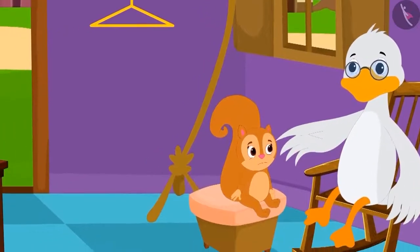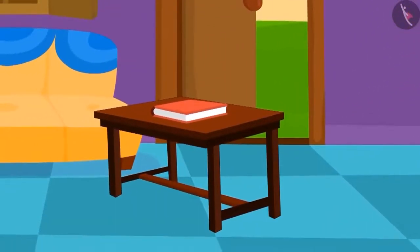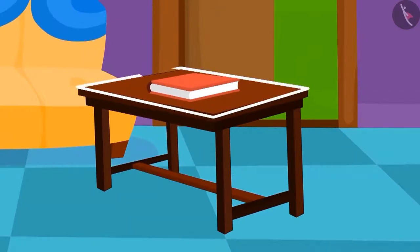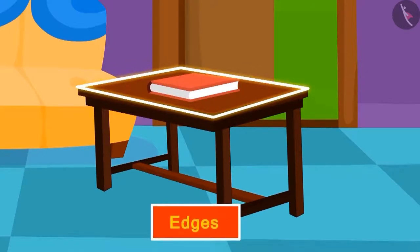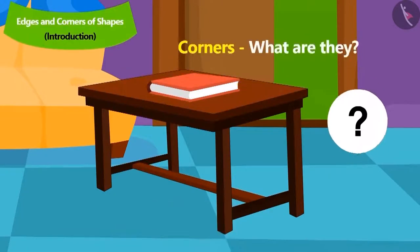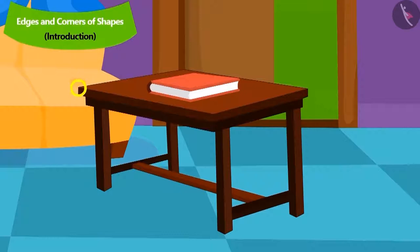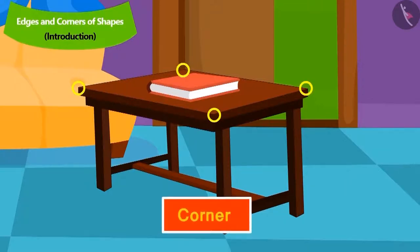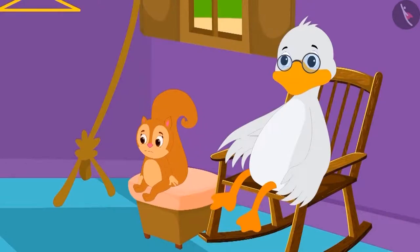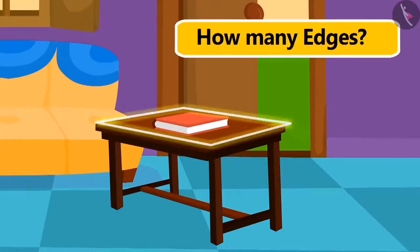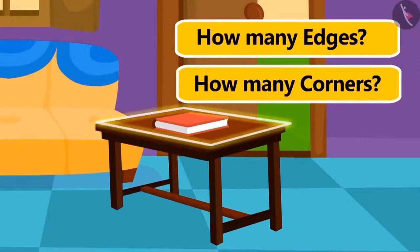Uncle showed the table at his place. He explained that outside the surface of this table, four lines are forming the boundary of the table — we call them edges. And where two edges meet, we call that point a corner. Uncle asked Chanda how many edges and corners are there on this rectangular table.